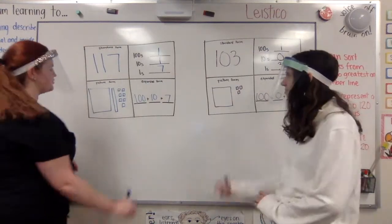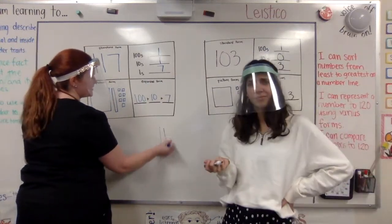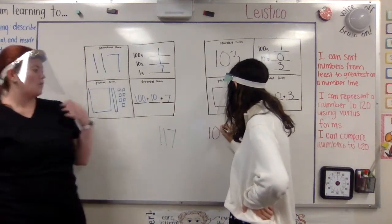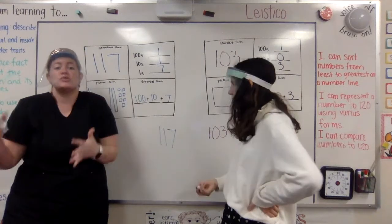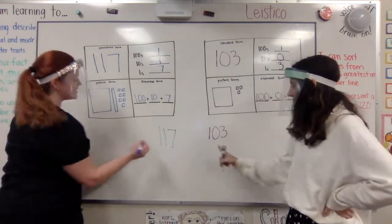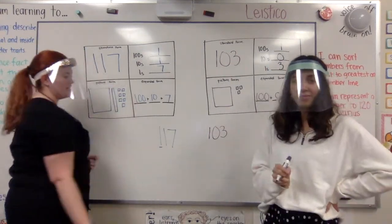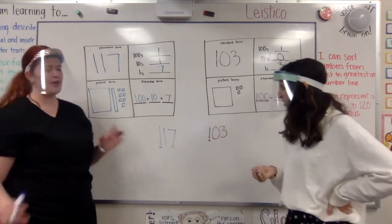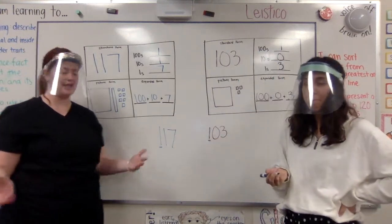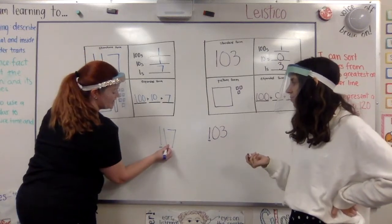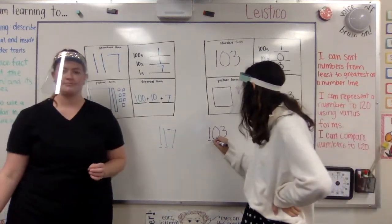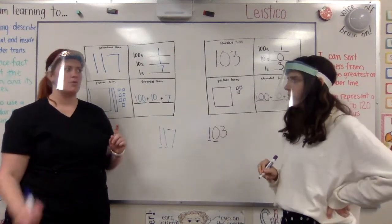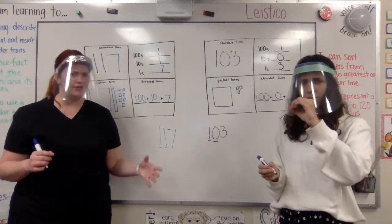Well, I think we should compare our two numbers. I have 117 and you had 103. That's right. We need to start by looking at the greatest place value. So Ms. Lustico, I have 1 hundred. Oh, I have a 1 in the hundreds place too. Okay, so they're equal. Let's look at the tens. I have 1 ten. I have 0 tens. Oh, they're not the same. Okay, well 1 is greater than 0.